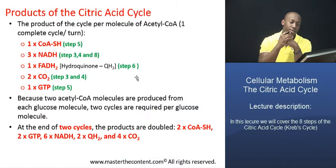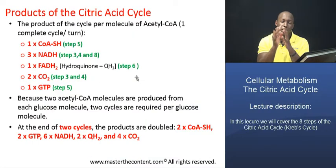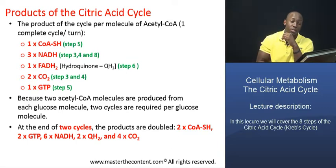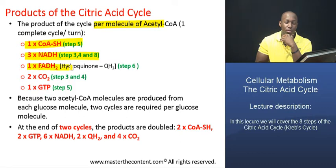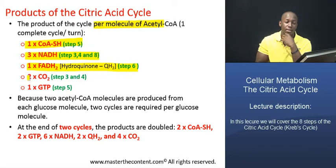So that's what we're going to do in the next slide. The product of one revolution, one turn, one cycle per molecule of acetyl coenzyme A — that's really important. Per molecule of acetyl coenzyme A: one molecule of coenzyme A, three molecules of NADH, one molecule of FADH2 (the reduced form of flavin adenine dinucleotide, also referred to as hydroquinone, the reduced form of quinone), two molecules of carbon dioxide, and one molecule of GTP, guanosine triphosphate.